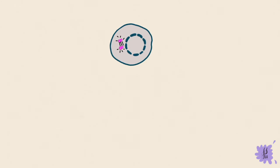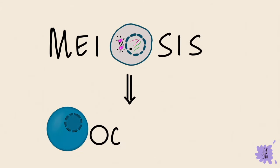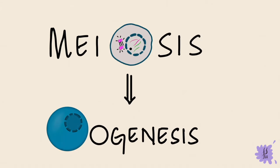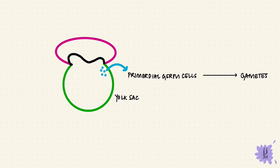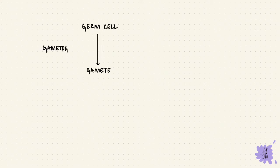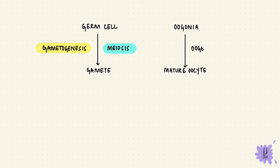Hello, welcome to Bite Size Med. In this video we're going to go over the steps of meiosis and apply them to understand oogenesis. During development, the embryo has primordial germ cells. These primordial germ cells are going to migrate from the endoderm of the yolk sac to the gonadal ridge, which is the developing ovary, to ultimately form gametes — in this case the mature oocyte or ovum. The process by which the germ cell forms a gamete is gametogenesis, and that process is meiosis. Here it goes from the oogonium to the mature oocyte, and the process is called oogenesis.